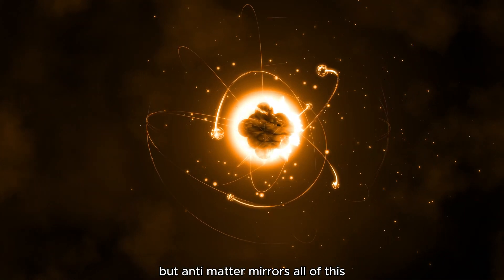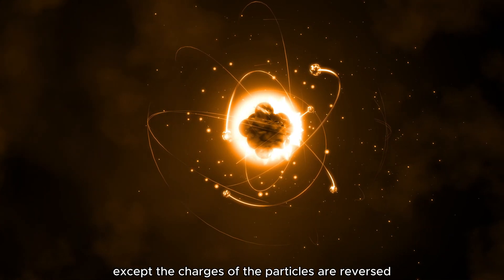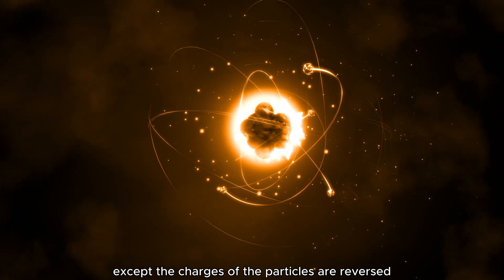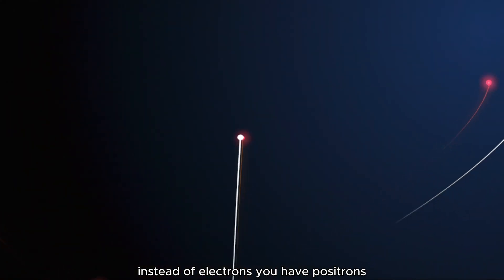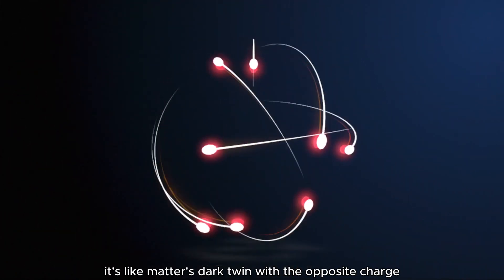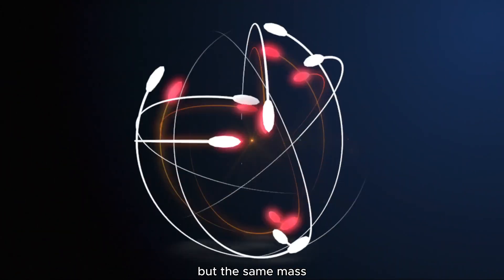But antimatter mirrors all of this, except the charges of the particles are reversed. Instead of protons, you have antiprotons. Instead of electrons, you have positrons. It's like matter's dark twin with the opposite charge but the same mass.